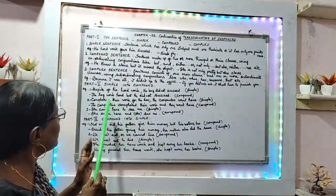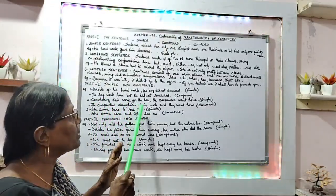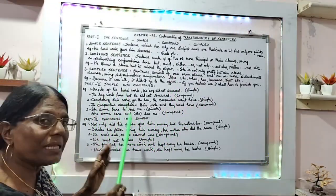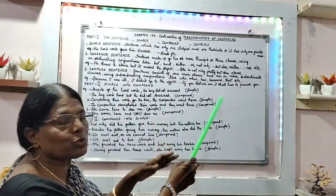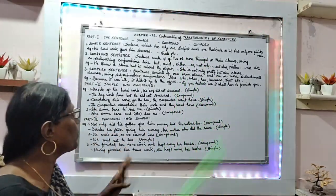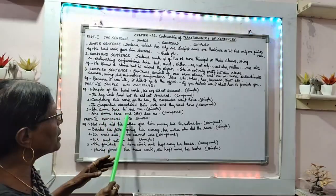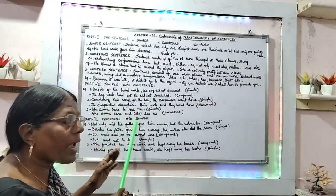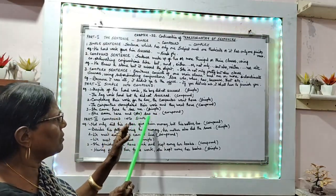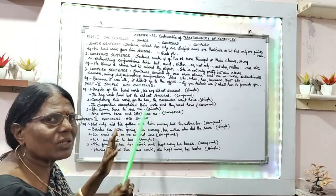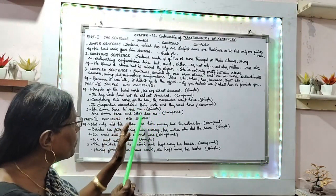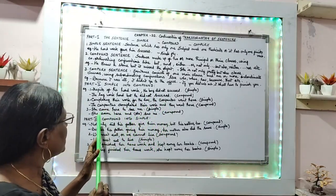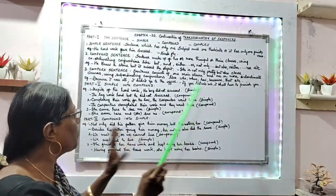Next example: 'Completing their work for the day, the carpenters went home.' That is a simple sentence changed to compound. Another example: 'She came here to see me' — that is a simple sentence. Changed to compound: 'She came here and saw me.' That is a compound sentence.